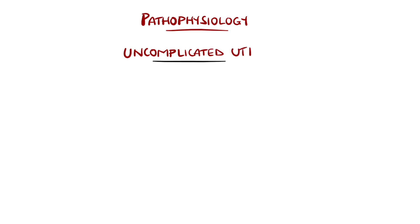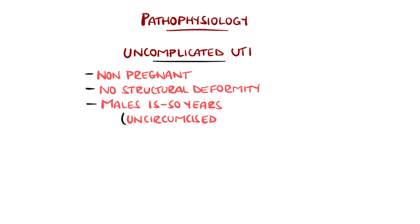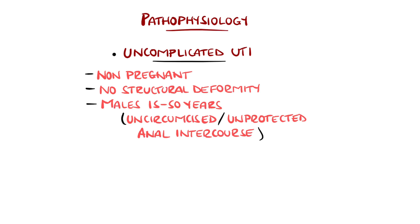A distinction is present between uncomplicated and complicated UTI. Uncomplicated is defined as occurring in non-pregnant women with no structural abnormalities. In most instances, UTIs in males occur in older adults or children and are considered complicated, but in those between the ages of 15 and 50 that are uncircumcised or have unprotected anal intercourse are considered uncomplicated.